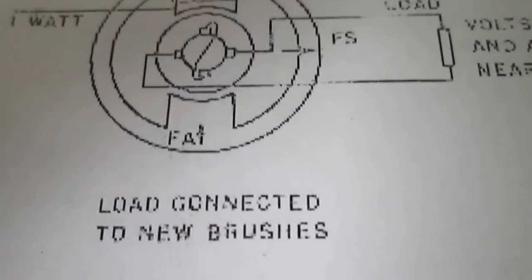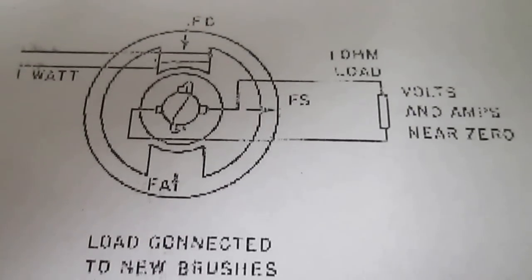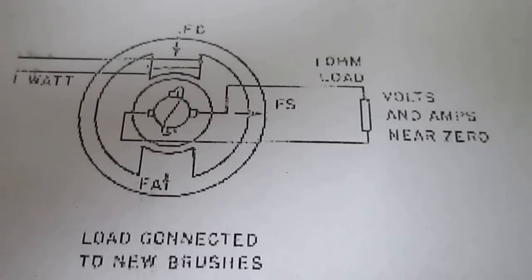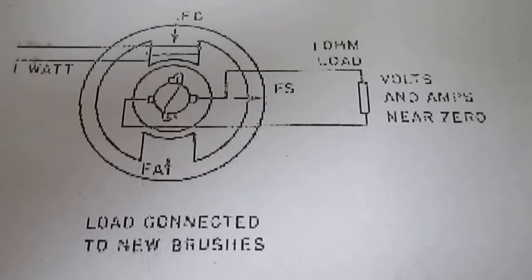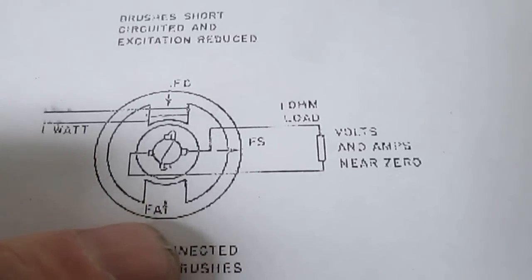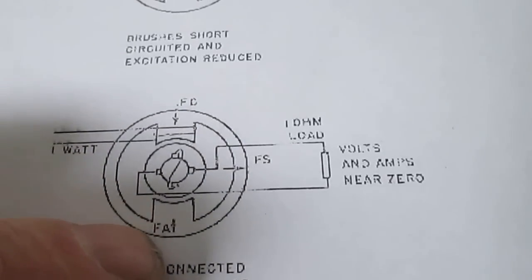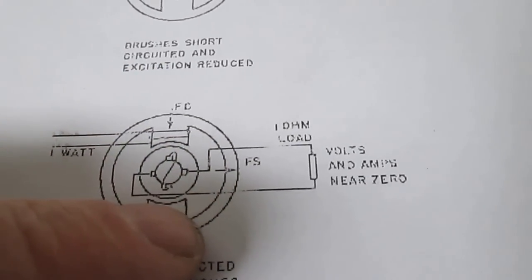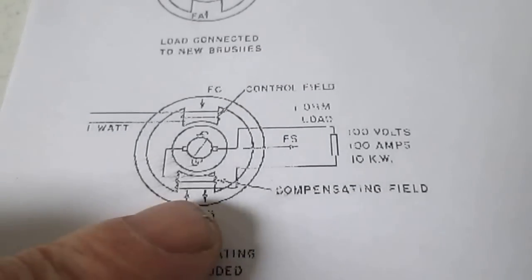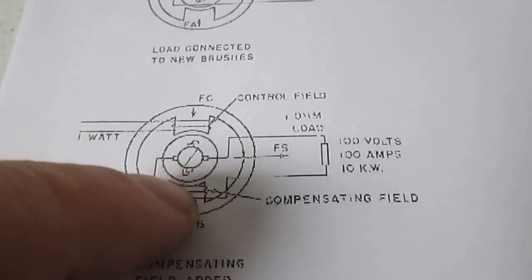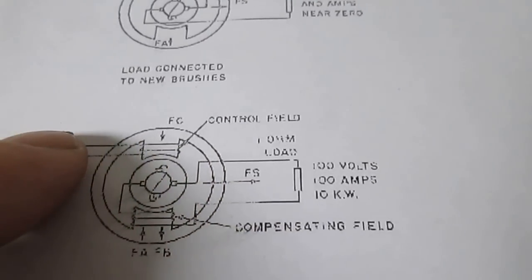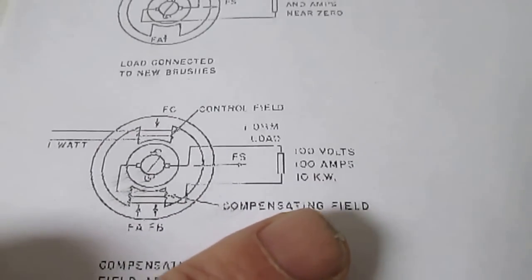Now for the third part to change the ordinary DC motor generator into an Amplodyne. Here, they are showing that the load connects to the new brushes, but if you have a look, it only connects on one side, the bottom side is untouched, because there's no coil there yet, but the fields compensate, but there's no output. And then the final step, the compensating field is added, but they are not connected to each other, but they're connected through the center. And now you've got 1 watt, and you're back up to full power. So this is where the confusion is.